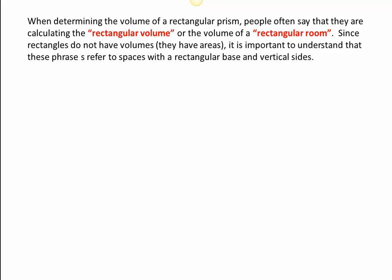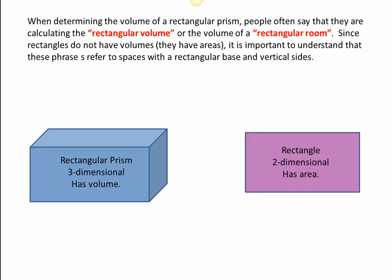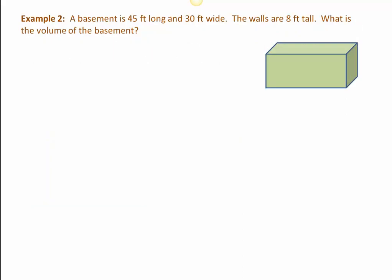Every trade has its commonly used language that may or may not be as math specific as I would like. When you are talking about a rectangular volume or the volume of a rectangular room, we really want to understand that rectangles don't have volumes, they have areas. What we're really talking about is a space that has a rectangular base and vertical sides, and so we get this rectangular prism. Let's try another example. We have a basement, 45 feet long and 30 feet wide, the walls are 8 feet tall. What is the volume of the basement? Let's start by labeling our picture.